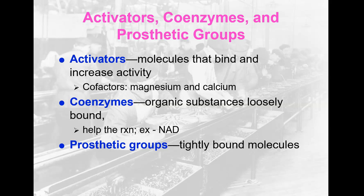Things that can turn enzymes on include activators, coenzymes, and prosthetic groups. Activators are molecules that bind and increase the activity of the enzyme — they can be cofactors such as magnesium or calcium. Coenzymes are organic substances that are loosely bound and help the reaction, like NAD. Prosthetic groups are tightly bound molecules that become part of the enzyme and are required for it to function — these could be magnesium, calcium, or zinc. If you need these and don't have enough, your enzymatic reactions won't happen in an optimal way.